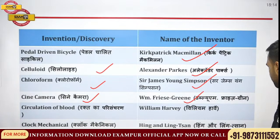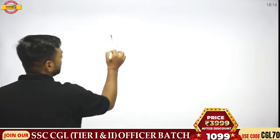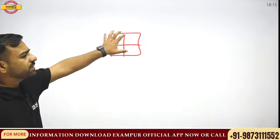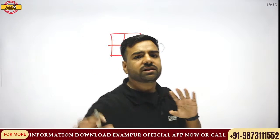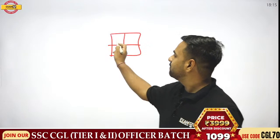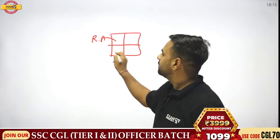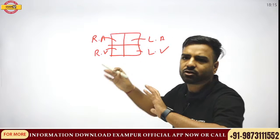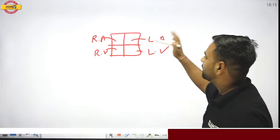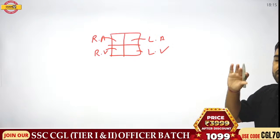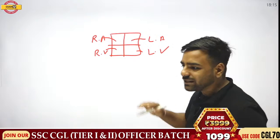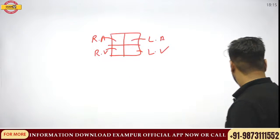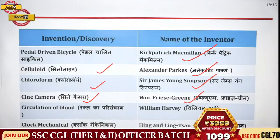Circulation of blood: there is a heart with four chambers — right auricle, right ventricle, left auricle, and left ventricle — and because of the heart, blood circulation takes place in the body. Who discovered blood circulation? It was William Harvey. The experiment was actually conducted on a horse.